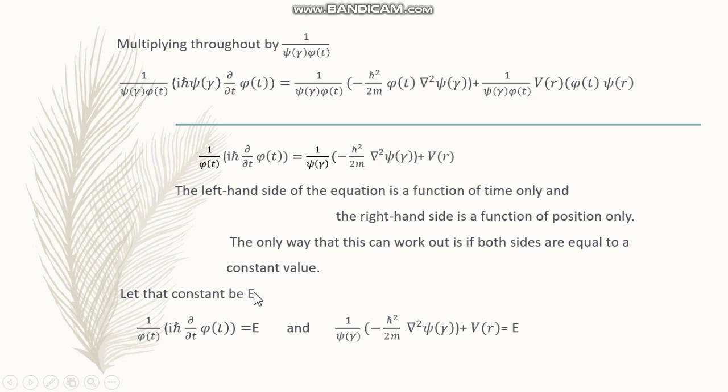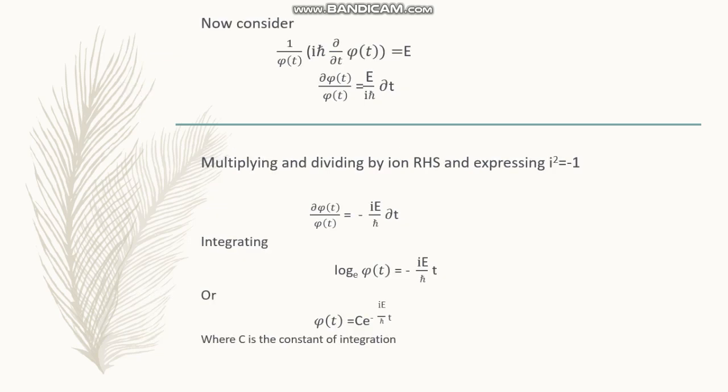The constant is assumed to be E, and the right side is equated to that E, thereby generating some interesting things. First of all, let us consider the LHS, that is 1 over phi t, i h-bar d by dt of phi t is equal to E.